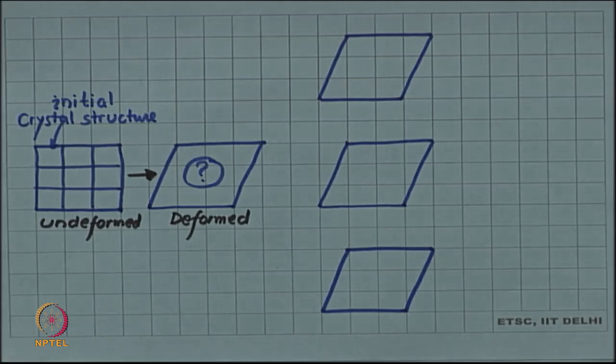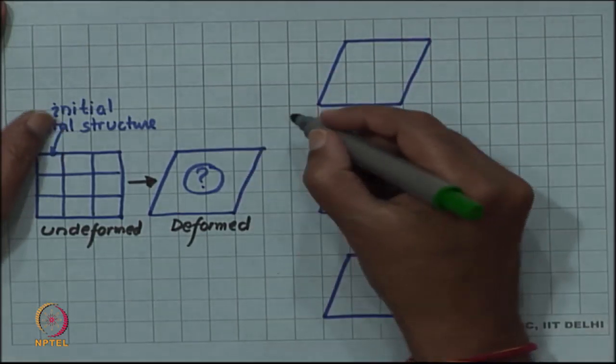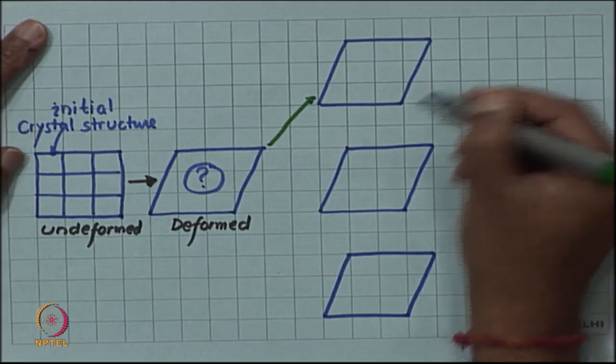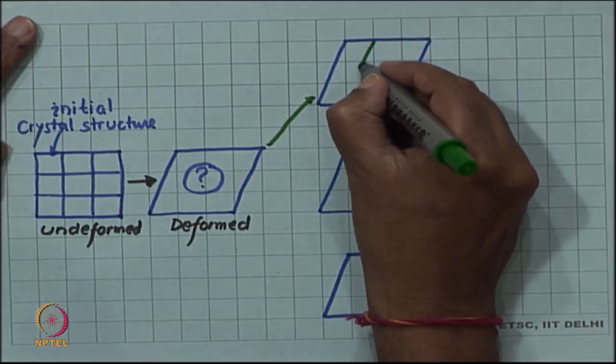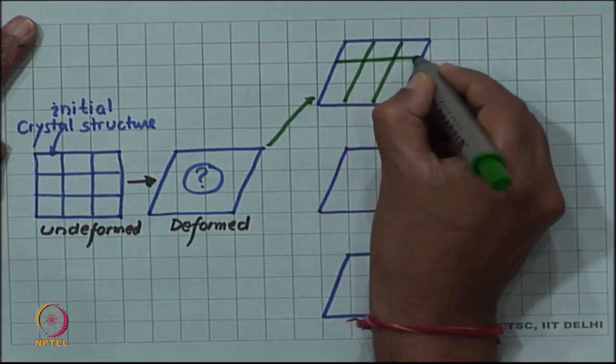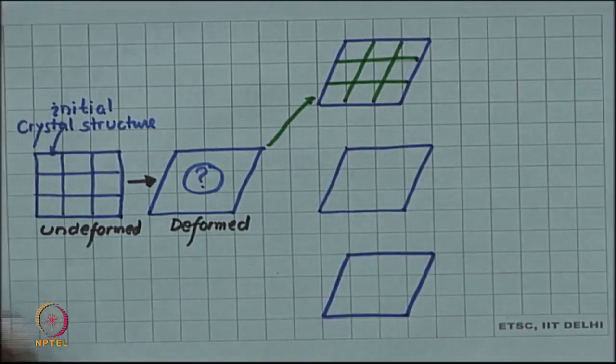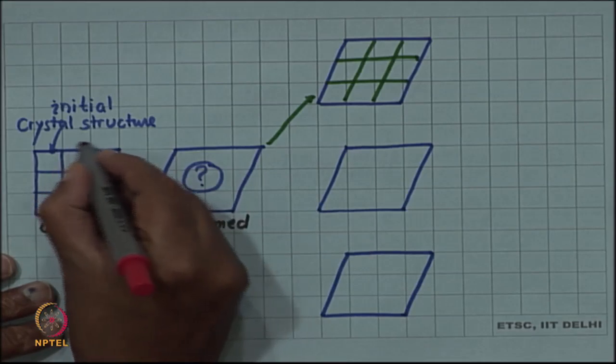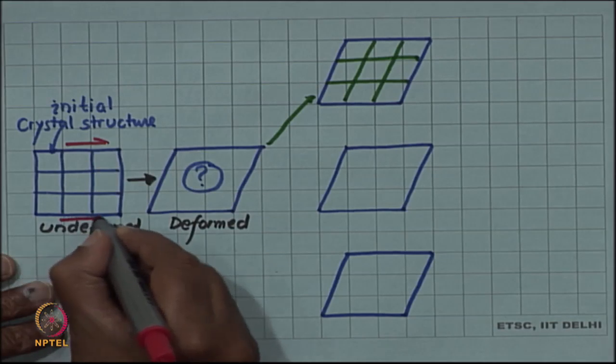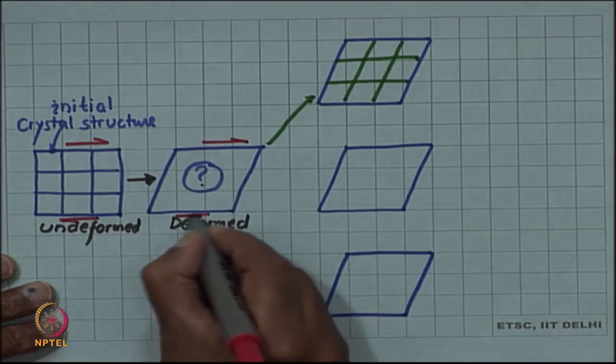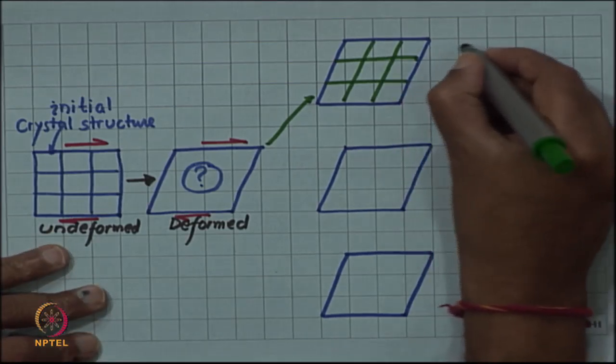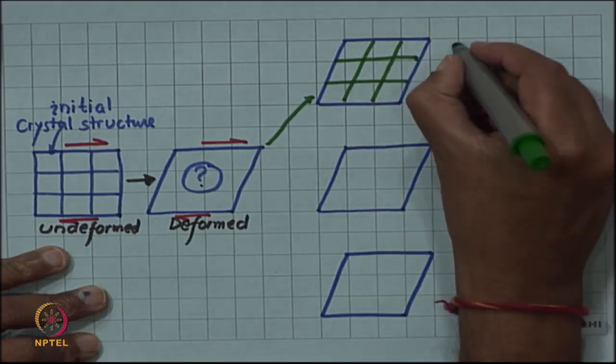Now, we can take several stands or several views about it. One view could be that as the material is deforming, the crystal structure also changes according to the deformation. This is quite natural to assume. I think that the deformation has changed the crystal structure. Notice that in this case, I am considering a very simple kind of deformation, which is a shear kind of deformation. One option can be the crystal structure changes due to deformation.